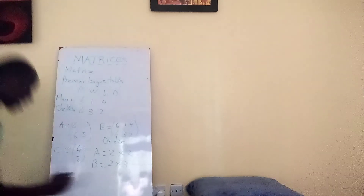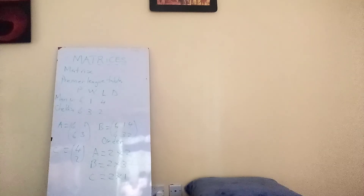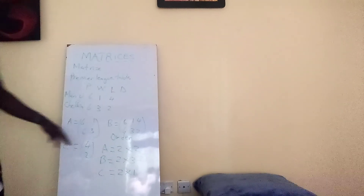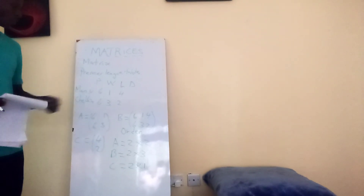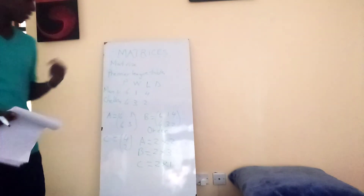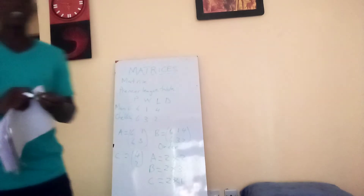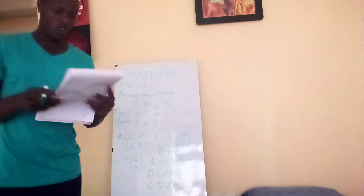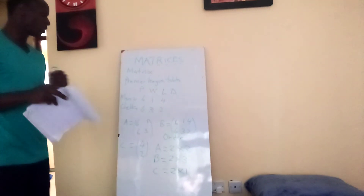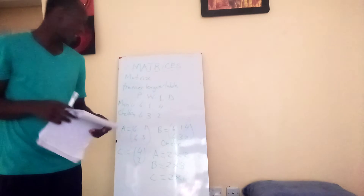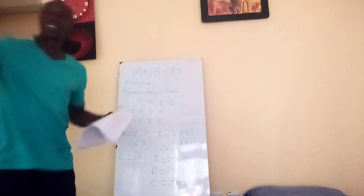The order of matrix C is 2 by 1 — 2 rows and 1 column. So that's how you represent a matrix: you state the number of rows and the number of columns to give you the order. For example, if a matrix has an order of 5 by 4, it means it has 5 rows and 4 columns.